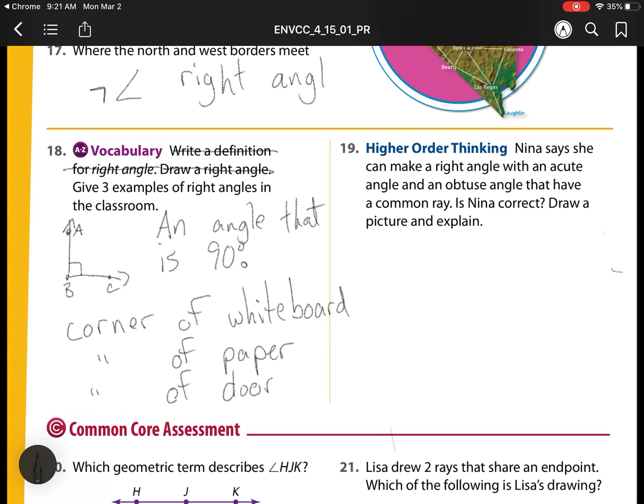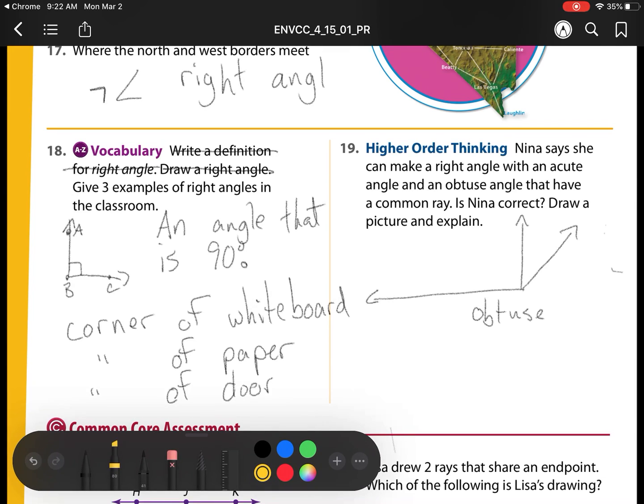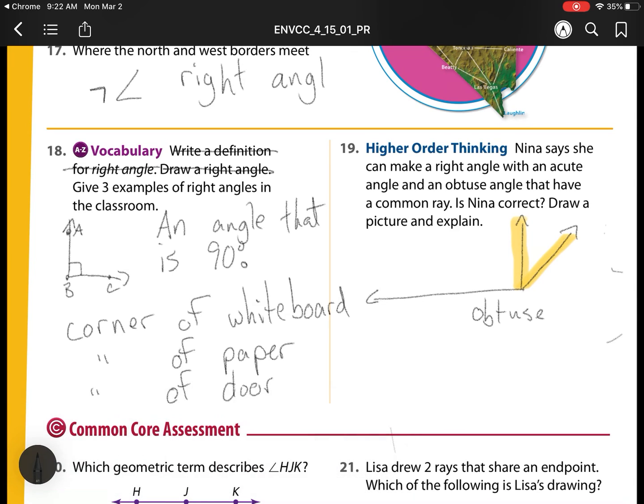Nina says she can make a right angle with an acute angle and obtuse angle that have a common ray. Is Nina correct? Draw a picture and explain. I'm going to have an obtuse angle. Remember, obtuse means it is bigger than 90 degrees. I'm going to break this obtuse angle up into an acute angle. I have an acute angle because that is less than 90 degrees. And that was an acute angle. What do I have now? What I have left is that right angle. So yes, she is correct.